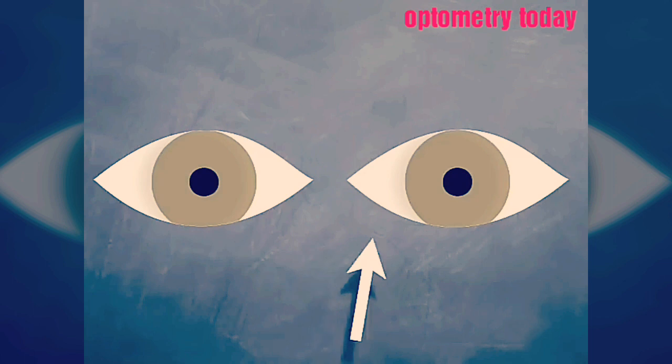With the swinging light test, the RAPD now becomes obvious. On the affected side, both pupils dilate when the light is swung across.